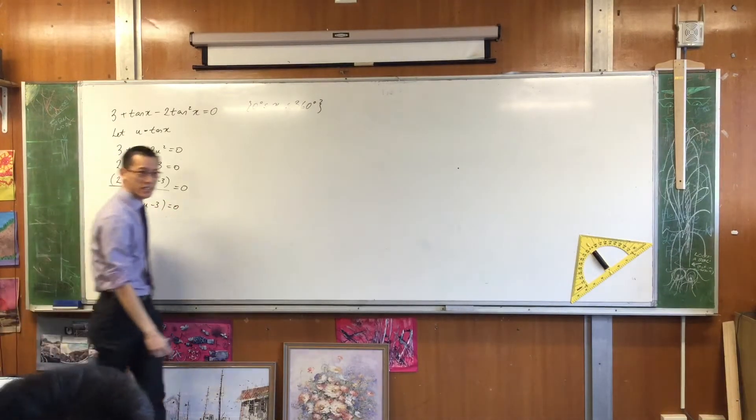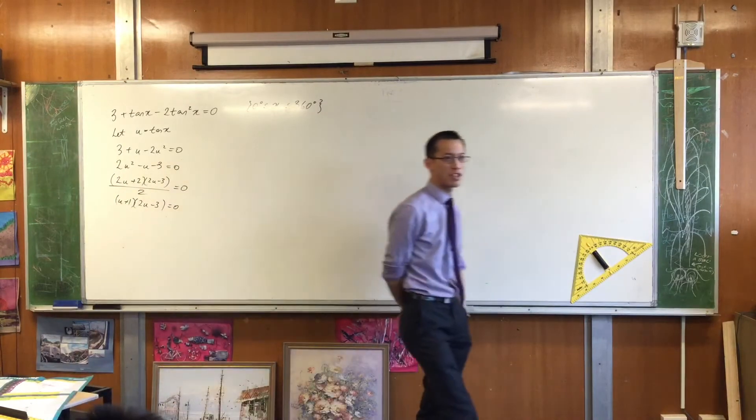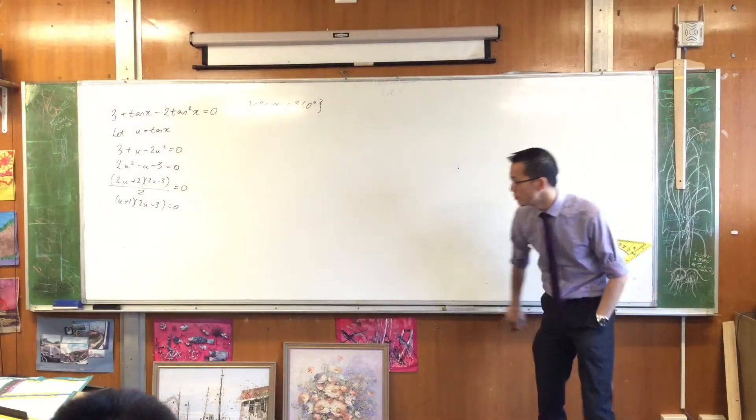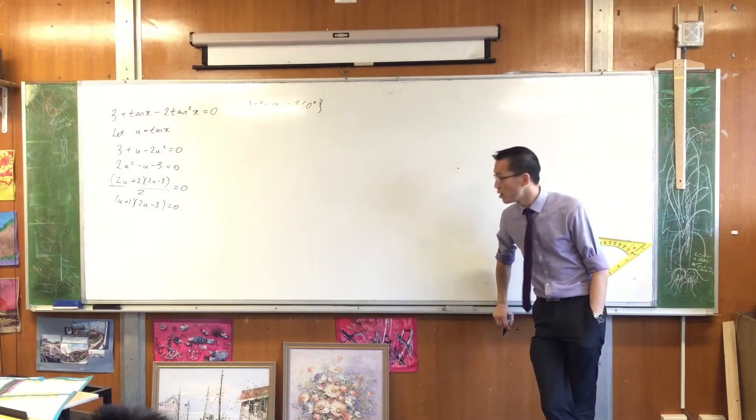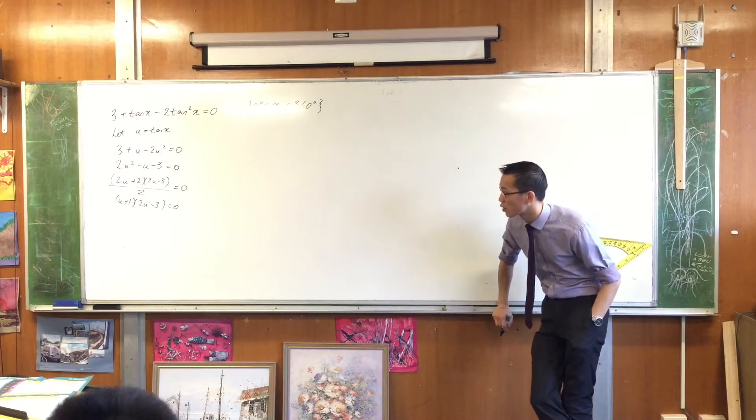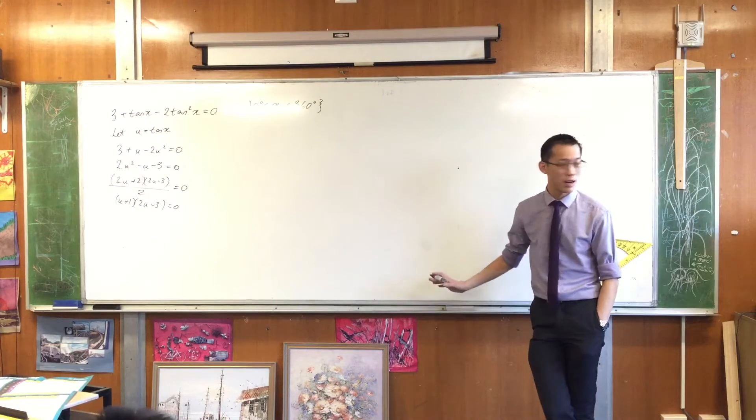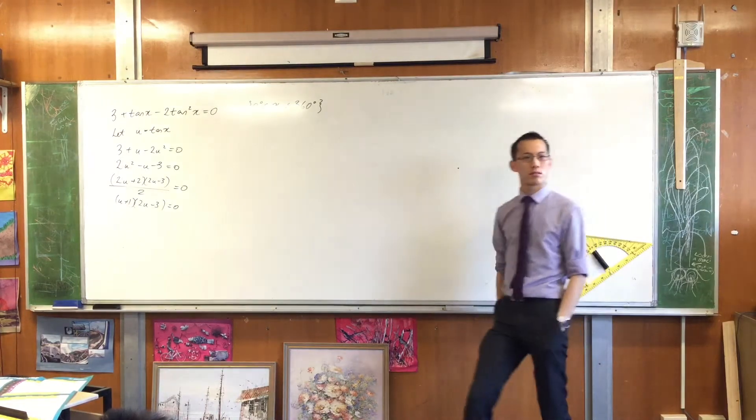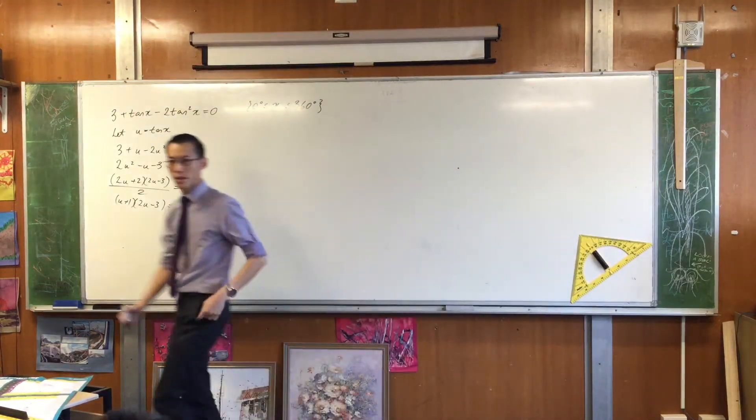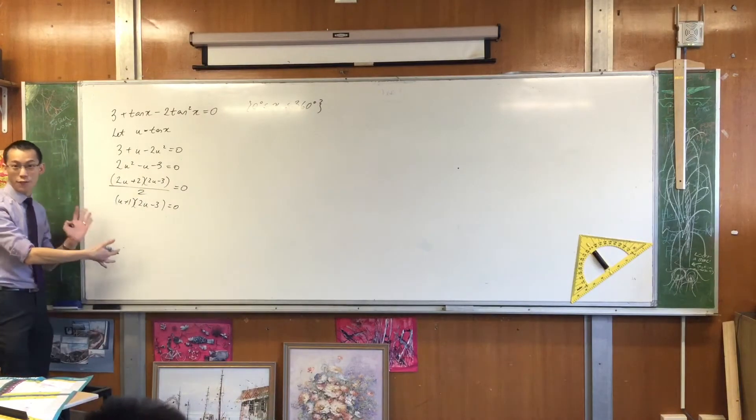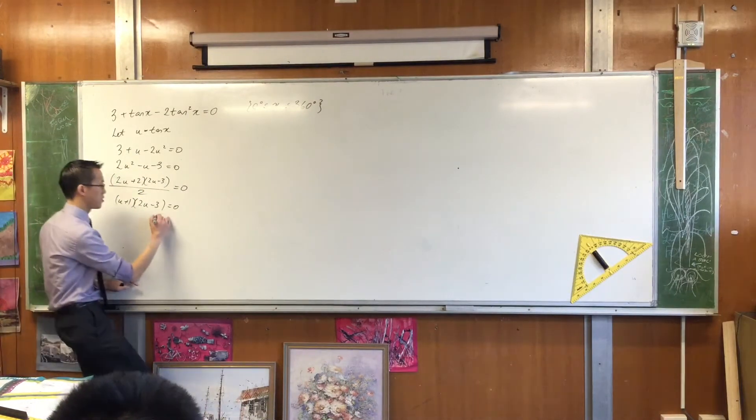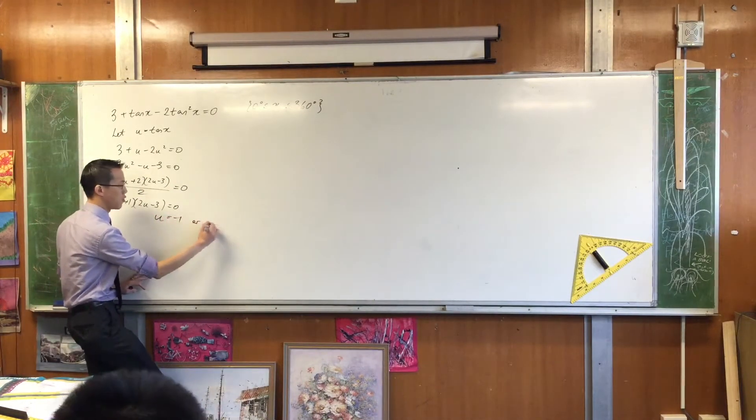Just do a quick mental check. Does that check out? Does that expand back to the original thing? You're going to get 2u squared, aren't you? You're going to get minus 3, and then you have a look at the u's in the middle. You have a plus 2u, you have a minus 3u. Happy so far? What do I do with this? Find u and subject to factor. Now I can solve for u. That's why I factorized, right?